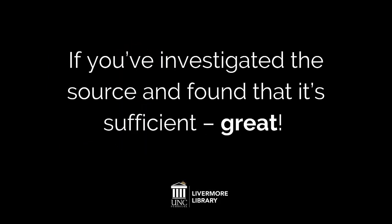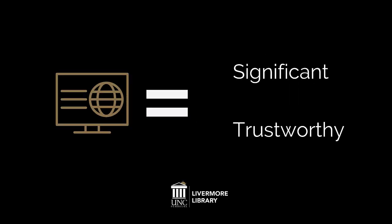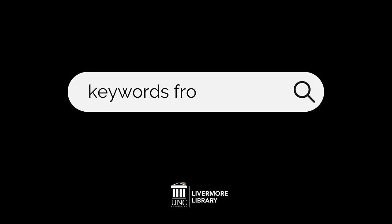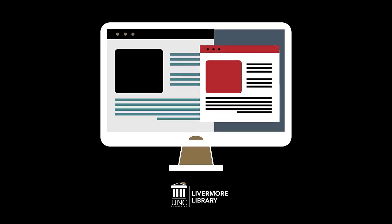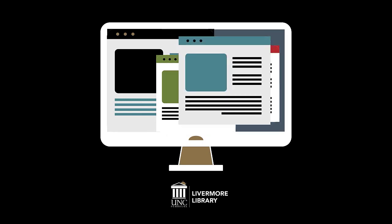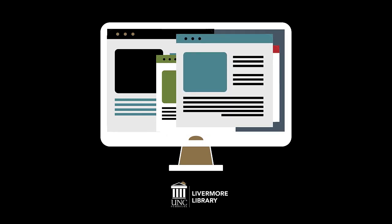If you've investigated the source and found that it's sufficient, great! When the source turns out to be not significant and trustworthy, you then need to do your best to find better coverage. In order to do this, type keywords from the article into Google. If your search shows that this story is being covered by multiple sites, that's a good sign. You can try to see if the other sites covering the information are more trustworthy.